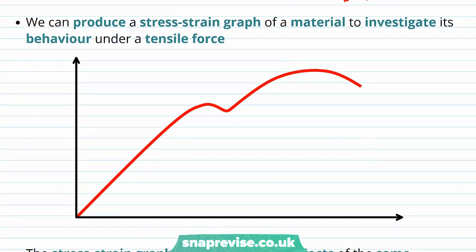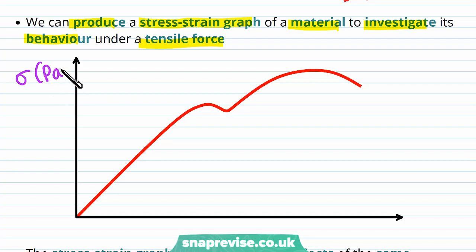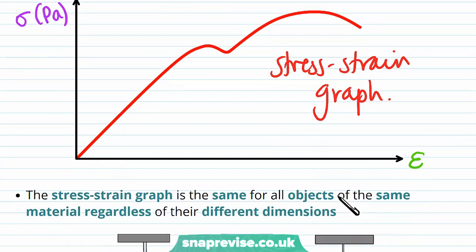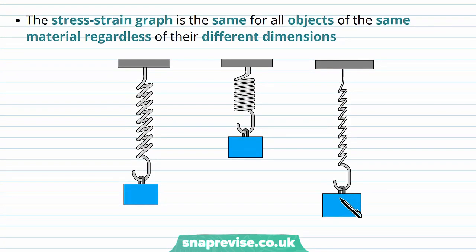Using these properties we can produce a stress strain graph of a material to investigate its behaviour under a tensile force. When we produce a stress strain graph, we put stress on the y-axis in pascals or newtons per metre squared, and strain on the x-axis. Remember, strain doesn't have any units. What's so useful about a stress strain graph is that it is the same for all objects of the same material, regardless of their different dimensions.